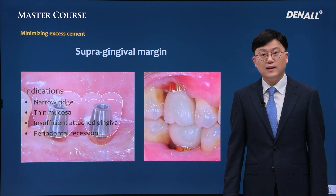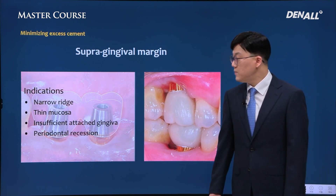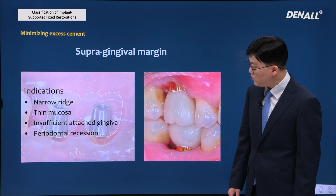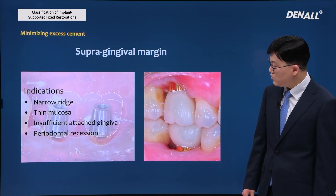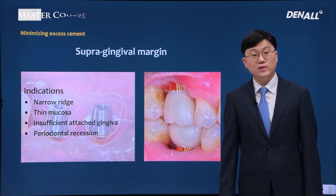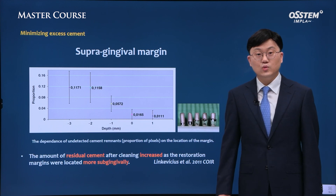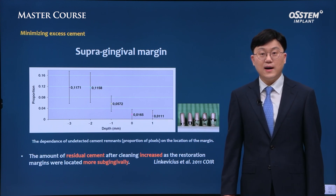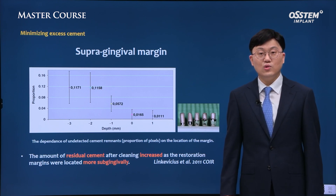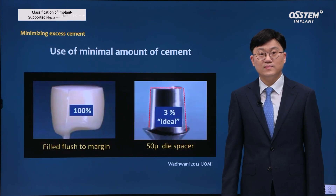First, we can think of supragingival margin, which can be utilized in four different scenarios: narrow ridge, thin mucosa, insufficient attached gingiva, and when there is periodontal recession. In these cases, supragingival margin can be considered. According to literature, if the margin of the implant prosthesis becomes steep, the amount of excess cement increases. If applicable, it is more favorable to make a supragingival margin.